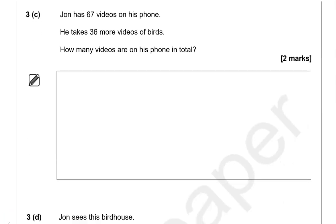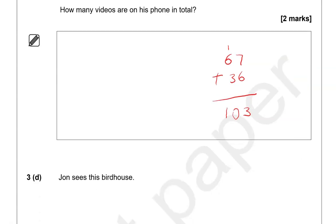John has 67 videos on his phone. He takes 36 more videos of birds. How many videos are on his phone in total? So we've got 67 and 36 more. So 7 and 6, that is 13. So 3 down and 1 is carried over. 6 and 3, that is 9. And the 1, that is 10. So that is 103 videos.